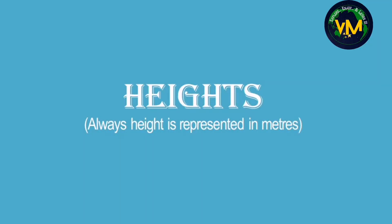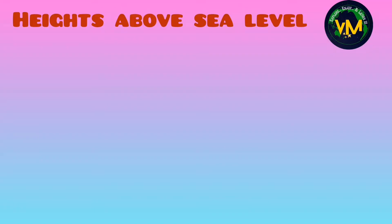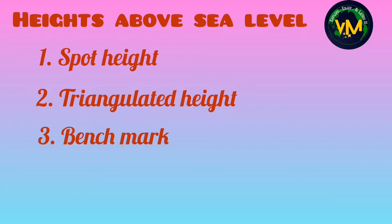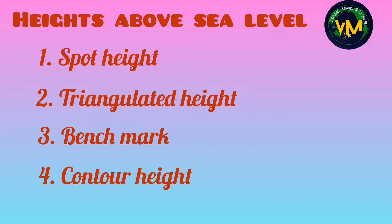First, you should know that heights are always represented in meters in a topographical map. Now under heights above sea level, we have four types: one is spot height, second triangulated height, third benchmark, and fourth contour height. The fourth topic, contour height, is a little lengthy and difficult, so we will see it in a separate video. Let us learn the heights above sea level one by one.